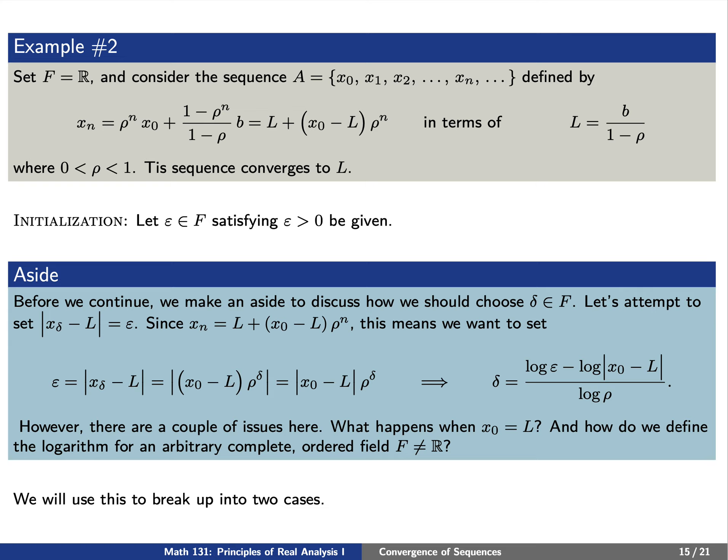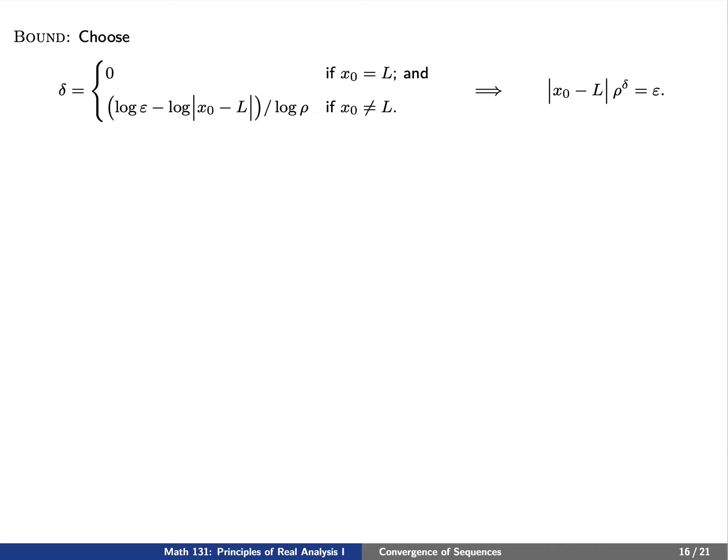We handle this by breaking into two cases. If x zero equals l, choose delta to be zero. Otherwise, choose delta using the formula from the aside. In either case, delta is chosen so that |x_0 − l|·ρ^{delta} = epsilon.